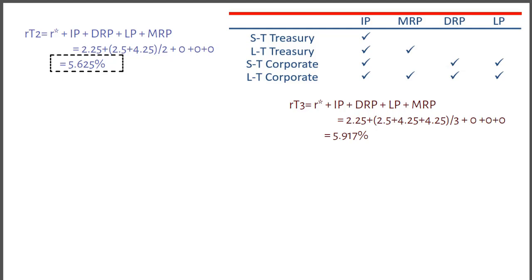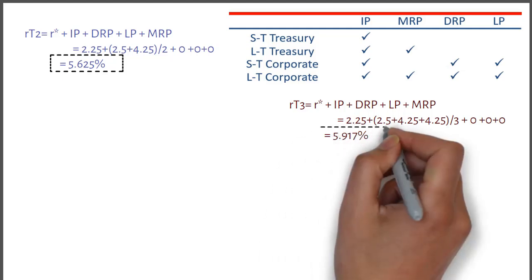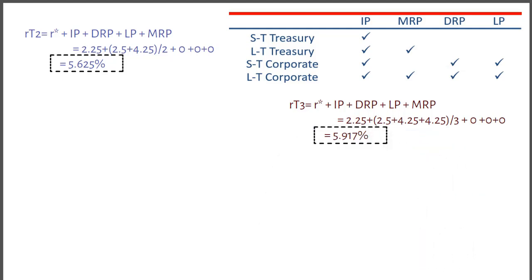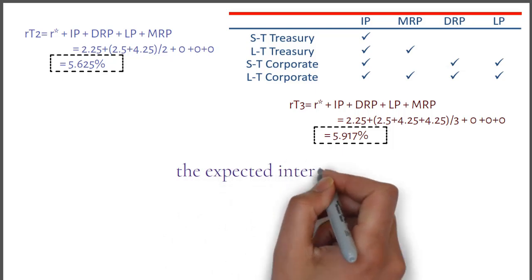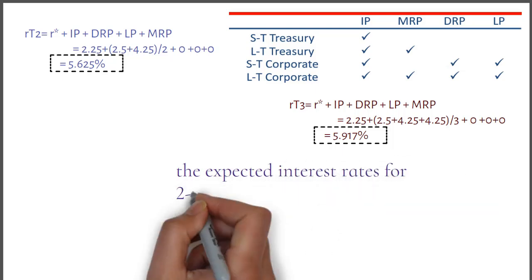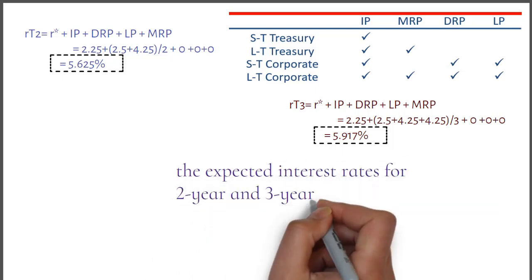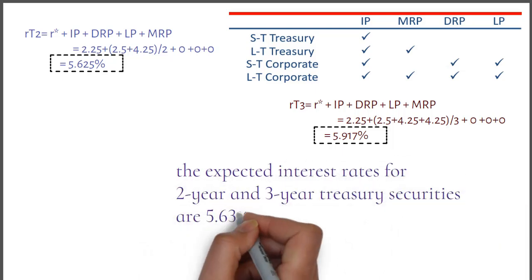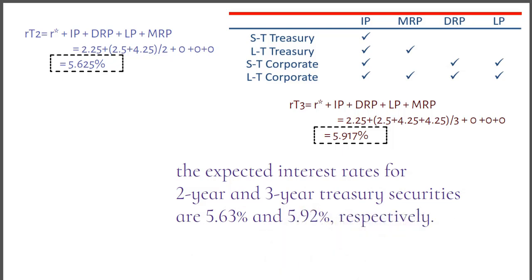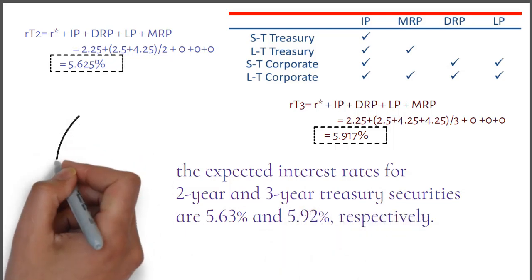To summarize, the expected interest rate for two-year and three-year treasury securities are 5.63% and 5.92% respectively. I hope this helps.